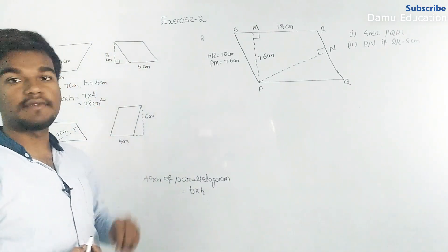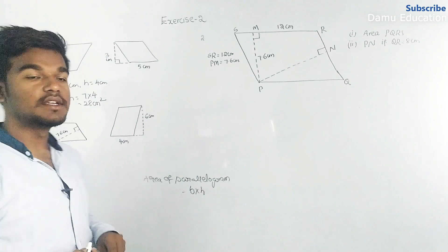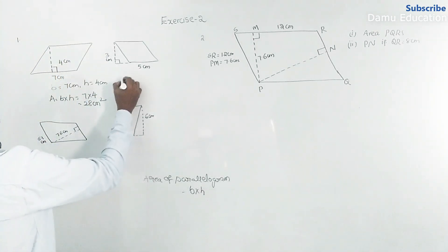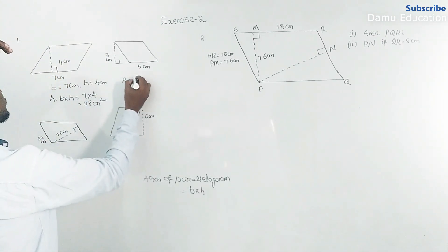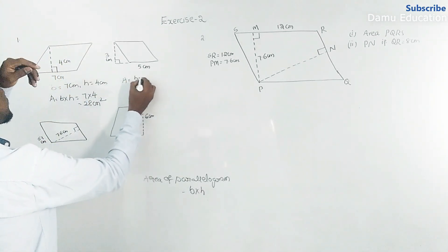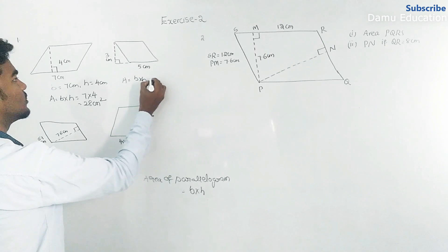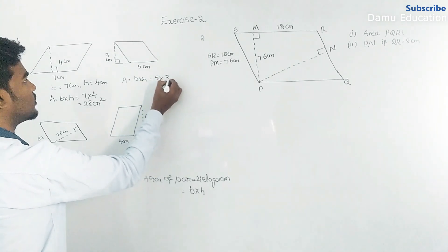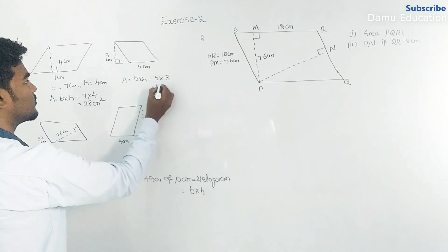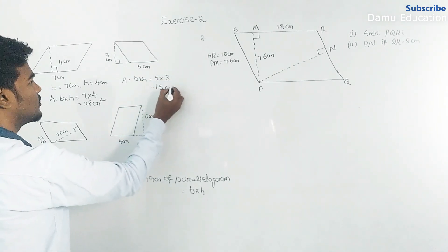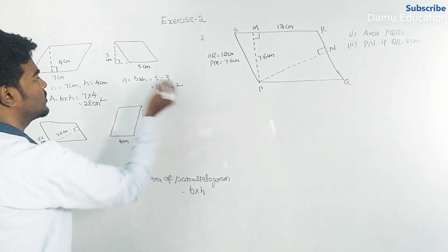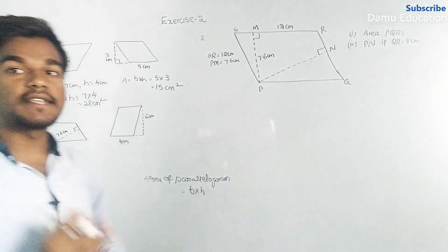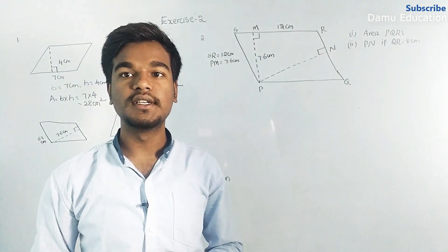For the second question, height is three and base is five centimeters. Area equals base into height, five into three, that equals 15 centimeters square.